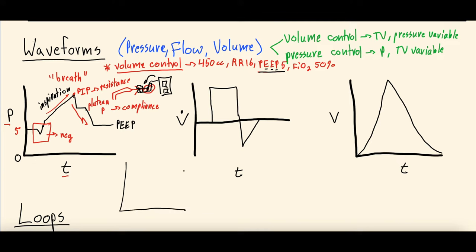The bottom part of the flow-time waveform is expiration — negative flow, expiring back toward the ventilator — and it should always return to zero. If the expiratory flow does not return to zero before the next inspiratory breath starts, this can sometimes be suggestive of air trapping. We'll go into abnormalities in a future video on how these waveforms change depending on different possible pathologies.